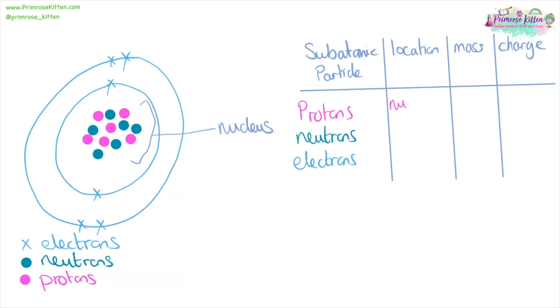Protons are in the nucleus. They have a mass of one and a charge of plus one. Neutrons are in the nucleus. They have a mass of one and a charge of zero. Electrons are in the outer shells. Their mass is one two thousandths, and they have a charge of minus one.